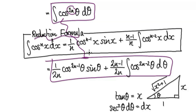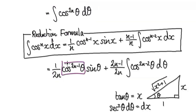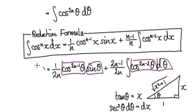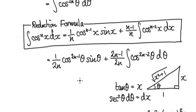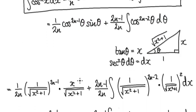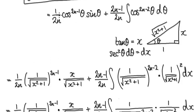So now the answer is all in terms of theta, but we don't want the answer in terms of theta — we want it in terms of x. So we go back to our original diagram and use it to translate everything back into x.